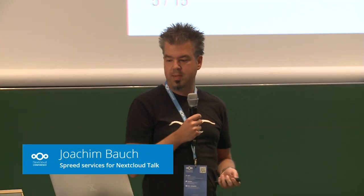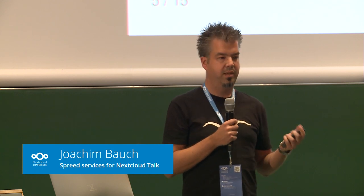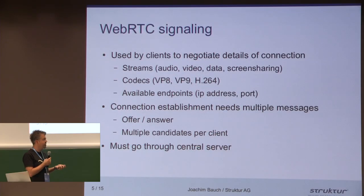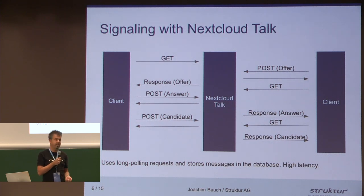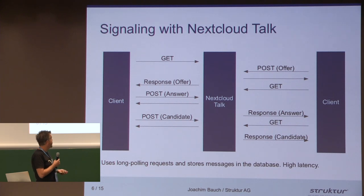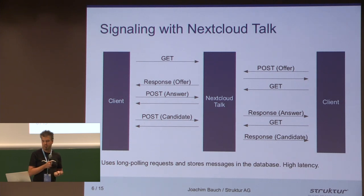That setup requires multiple messages. There's an offer and answer first being sent containing all the codecs, and then there are multiple candidates containing the IP addresses and the ports. These have to go through a central server because before the actual setup, the clients don't know each other yet. With Nextcloud Talk, if you just install the regular app, everything goes through Nextcloud. The messages are stored in the database, and the clients are using long polling — GET and POST requests — to actually send the messages to Nextcloud and to retrieve them. On Nextcloud, a PHP request is being handled and is polling the database for new messages.